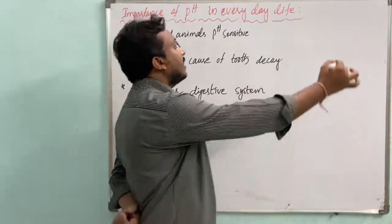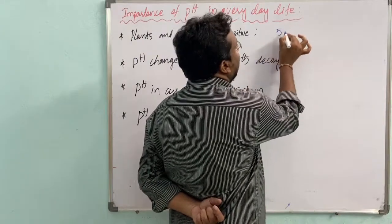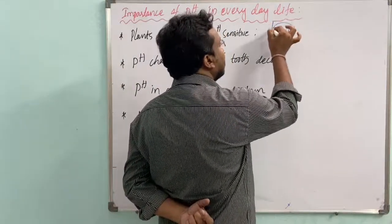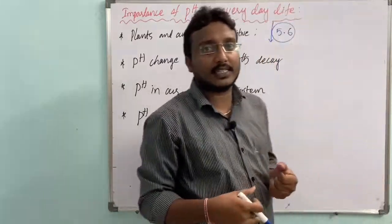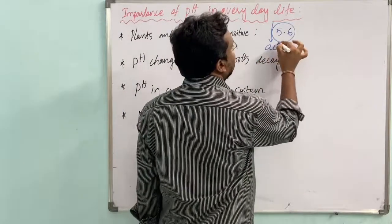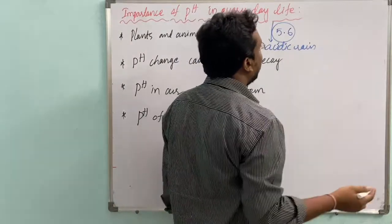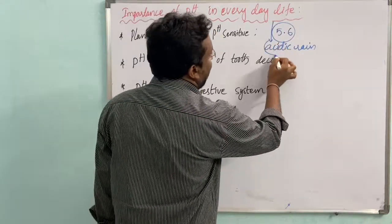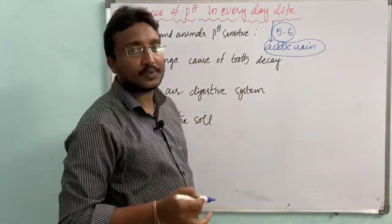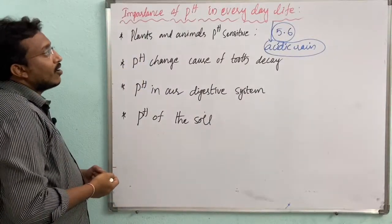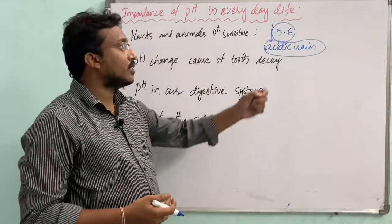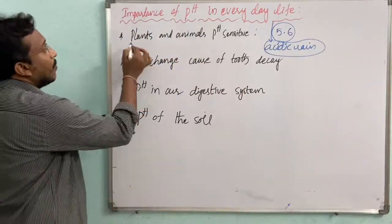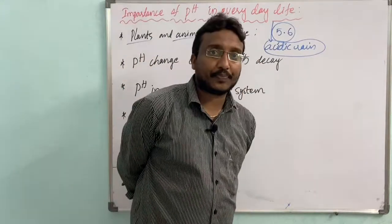Plants and animals are pH sensitive. If rainwater's pH decreases below 5.6, it causes acid rain. When that acidic rainwater flows into rivers, it is harmful to the plants and animals that use that water.